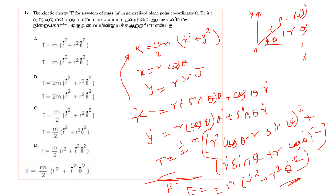So the kinetic energy in plane polar coordinates is T equals (m/2)(r-dot² + r²·θ-dot²). Option C is the correct answer. If you have any doubts, please put them in the comment box. Thank you, and all the best.